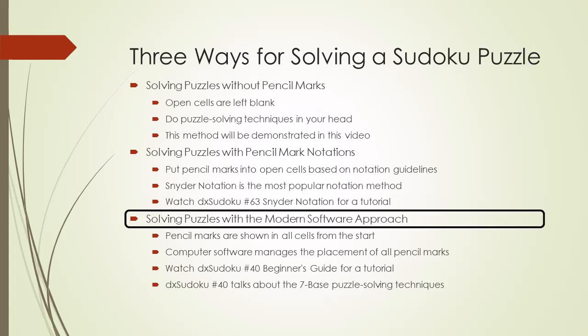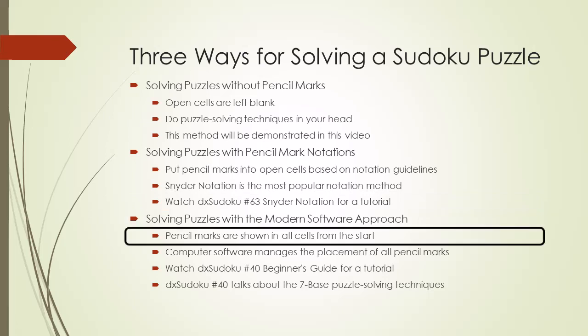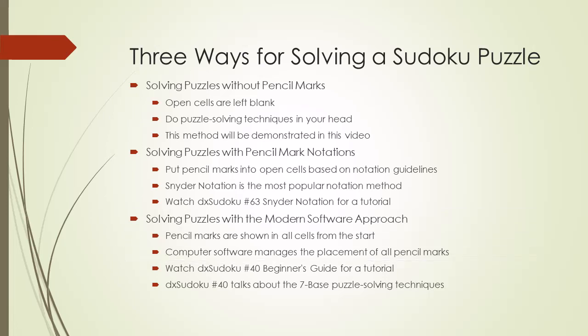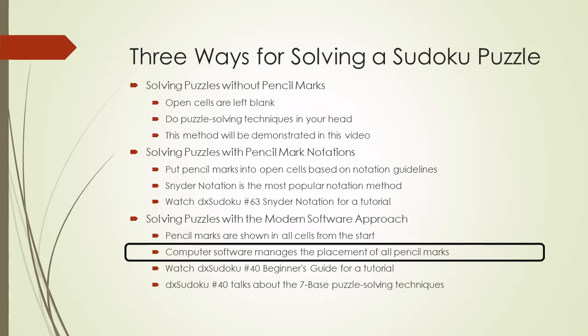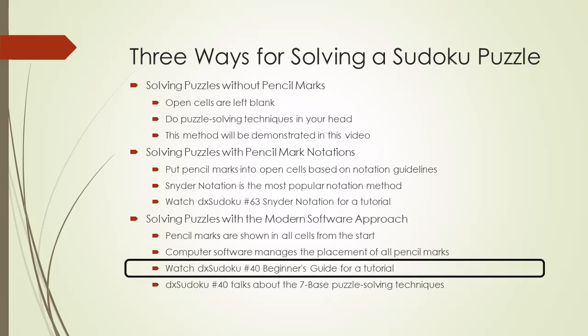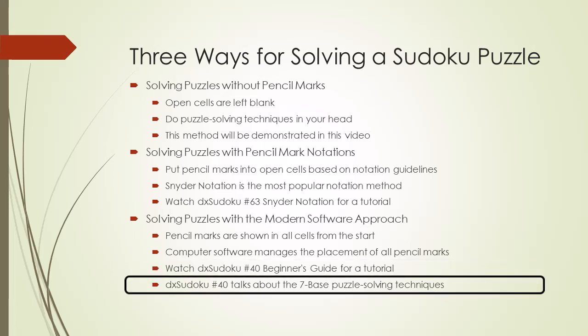The third way of solving a Sudoku puzzle is called the modern software approach. With the modern software approach, all pencil marks are shown in every open cell from the start, and computer software manages the placement and removal of all pencil marks as you solve the puzzle. For a tutorial on this approach, watch DX Sudoku video number 40 titled Beginner's Guide, which also talks about the seven base puzzle solving techniques — the seven most commonly used techniques for Sudoku puzzles.